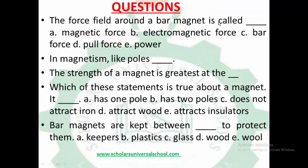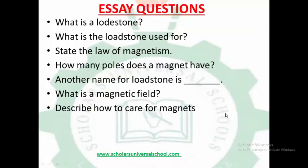Questions: The field of force around the magnet is called the ___. Like poles ___. The strength of a magnet is greatest at the ___. Which of these statements is true about a magnet? A) It has one pole, B) It has two poles, C) It does not attract irons, D) It attracts wood, E) It attracts insulators. What are magnets kept between to protect them? A) Keepers, B) Plastic, C) Glass, D) Wood. What is a lodestone? What is lodestone used for? State the law of magnetism. How many poles does a magnet have? What is another name for lodestone? What is a magnetic field? Describe how to care for magnets.